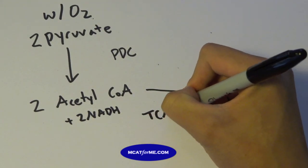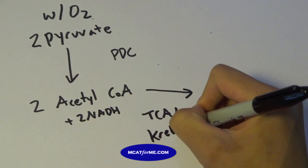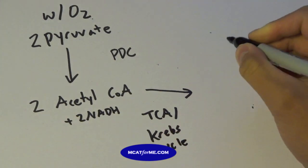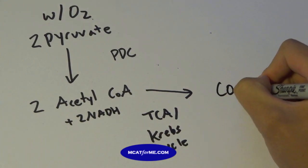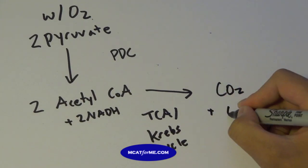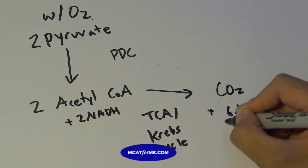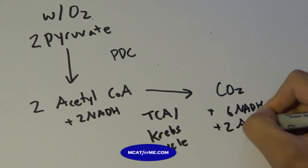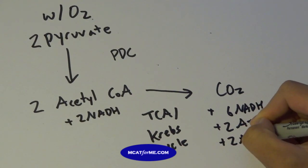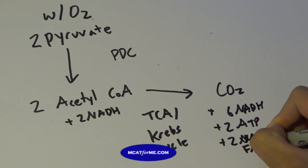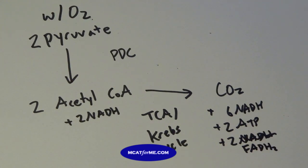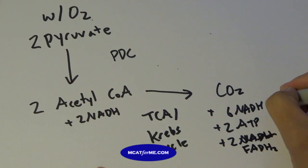And so this two acetyl CoA will go now into something called the TCA or Krebs cycle. You guys probably remember this. The TCA or Krebs cycle, the end product will be CO2. But along the way, we'll form six NADH, two ATP, two NADH, or sorry, two FADH2. All right. So we have these products.